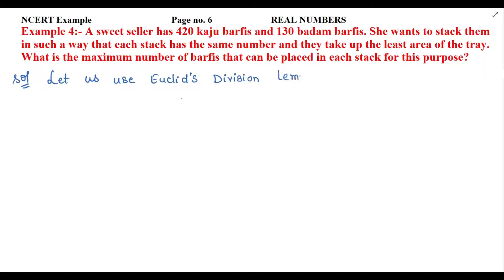For this, we will assume 420 as 'a' since it's the larger value, and 130 as 'b'. Now we have to divide 420 by 130.